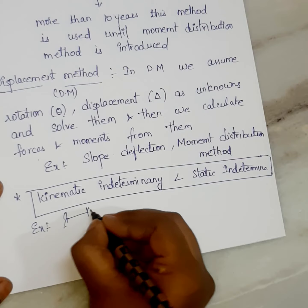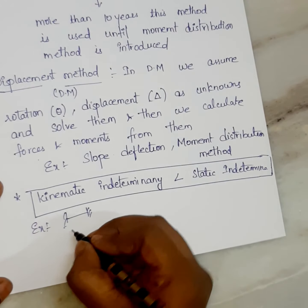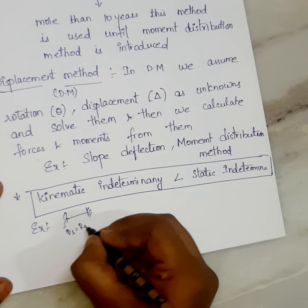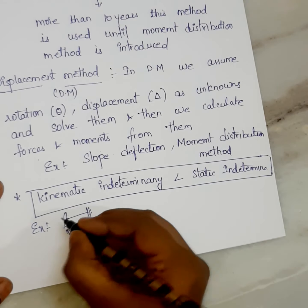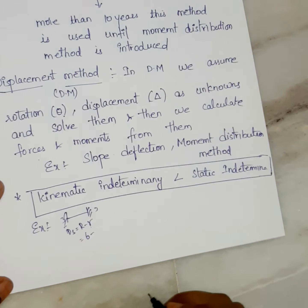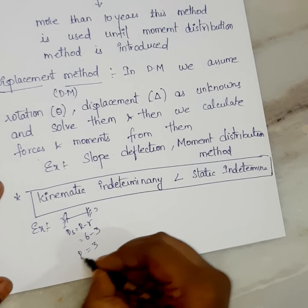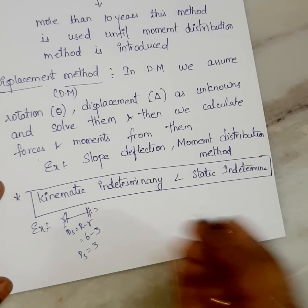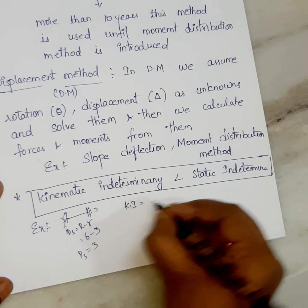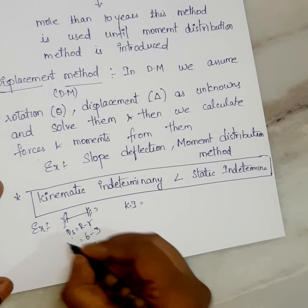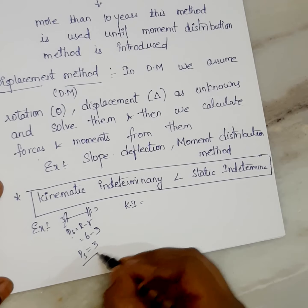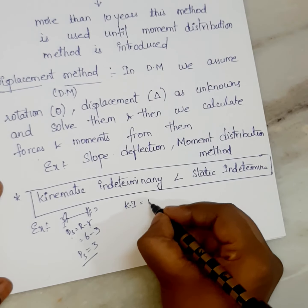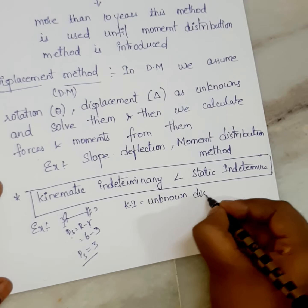For example, take a fixed beam. Static indeterminacy equals R minus r degrees. Here R is the number of unknowns, which is 6 (3 and 3), and small r is the number of equilibrium equations. So the static indeterminacy degree is 3. Next, kinematic indeterminacy is nothing but the number of unknown displacements.